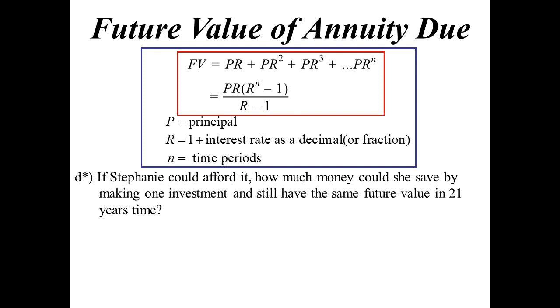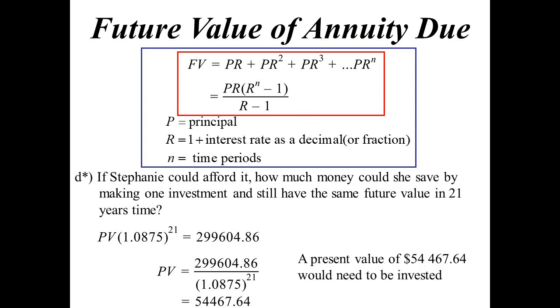So if she could afford it, how much money could she save by just making one investment and still have the same future value in 21 years time? In other words, we now want to find out what the present value of this investment would be. So one investment, it's in there for 21 years, but we want it to equal the same amount. $299,604.86. We'll divide by 1.0875 to the power of 21. The present value would be $54,467.64. If I was to invest that now, do nothing else, come back in 21 years time, I would have the same amount.